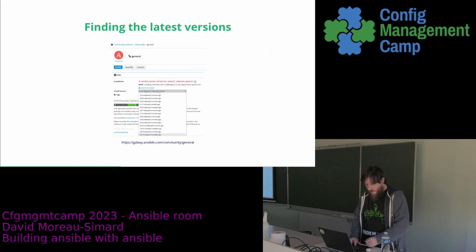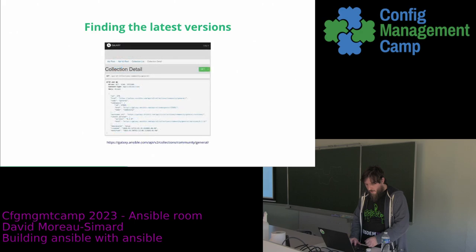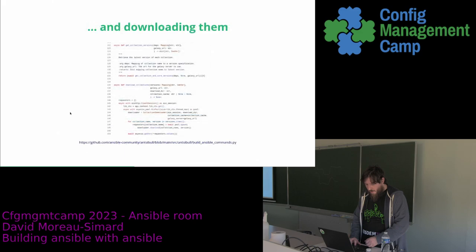Then we need to find the latest versions that are available. You probably know about Ansible Galaxy — Ansible Galaxy has an API. So if we dig a little bit into the API, we can search for the collection we're interested in and find out what is the latest version. Then we need to download these collections. There's a project called Ansible that wraps around some bits of the Ansible Galaxy API such that we can download the collections as fast as possible.